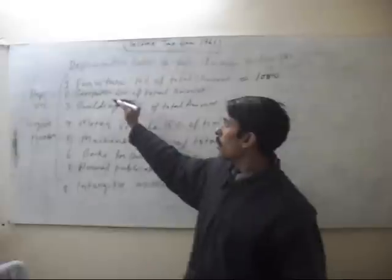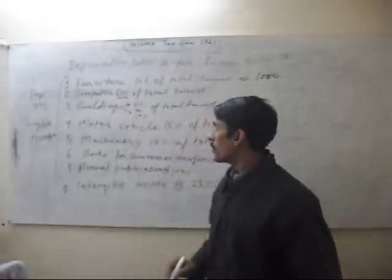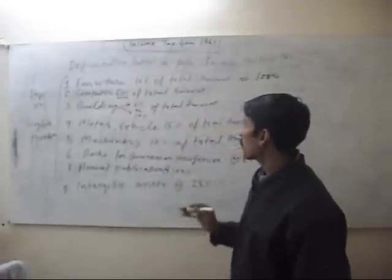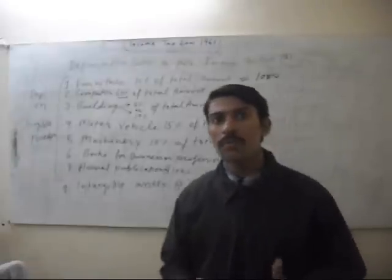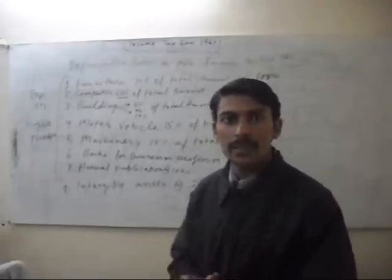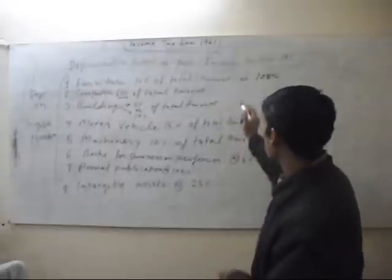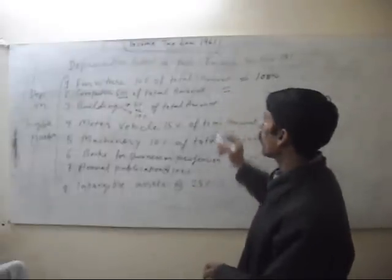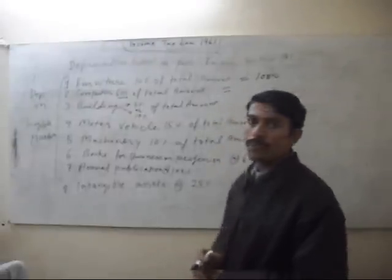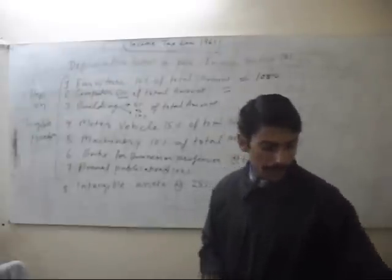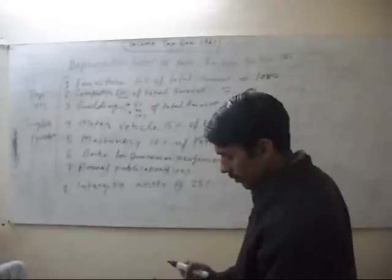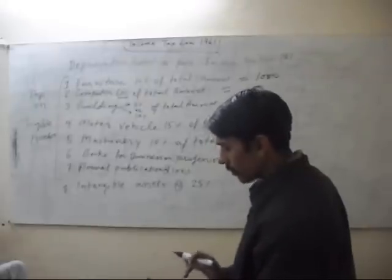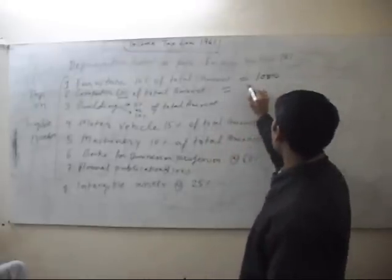On computer, rate of depreciation is 60 percent of total amount. If total amount of computer is 60,000, then depreciation will be 60 percent of this 60,000, which is 36,000.